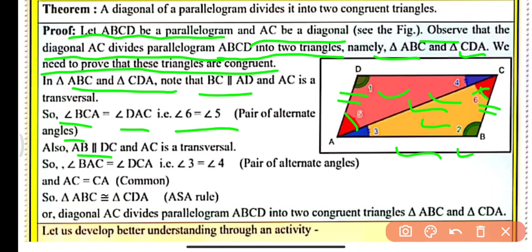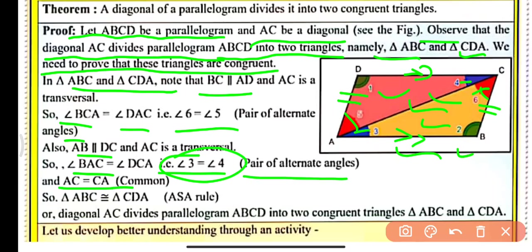Similarly, AB is parallel to CD and AC acts as a transversal. So angle BAC and angle DCA will be equal to each other — that is, angle 3 equals angle 4 — again a pair of alternate interior angles.